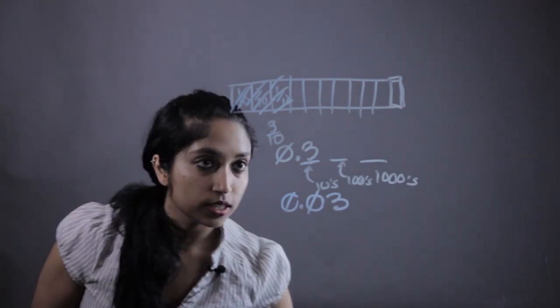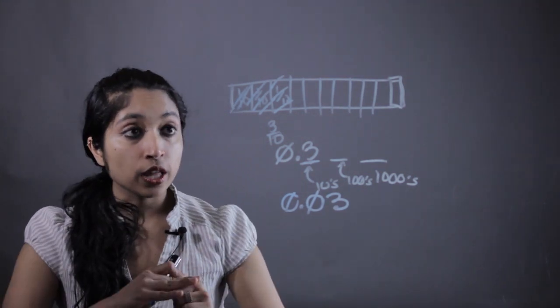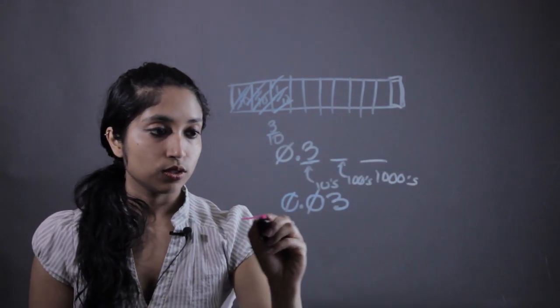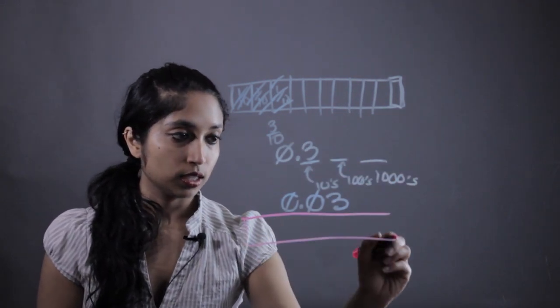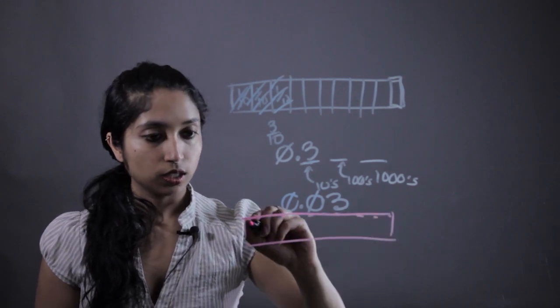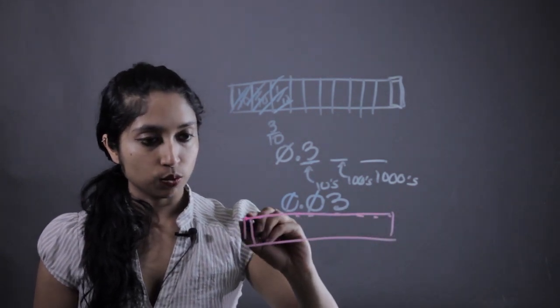And a good way to help them visualize that would be another fraction strip that you can line up right next to it. So say we had one of these and it was divided into a hundred little pieces and we wanted to color in just three of them.